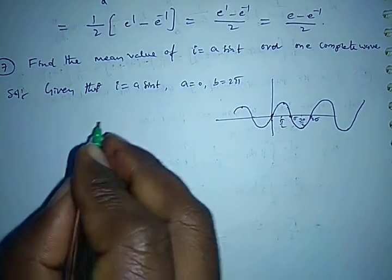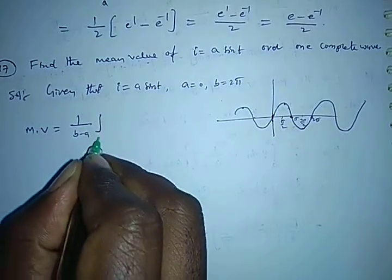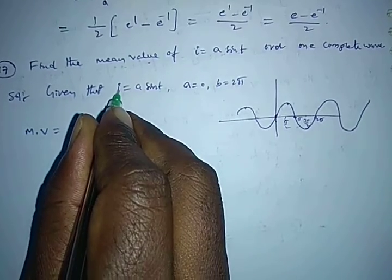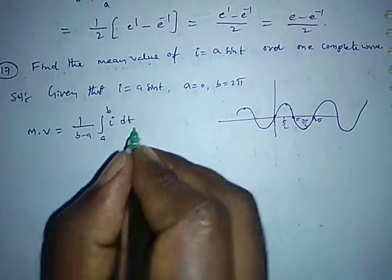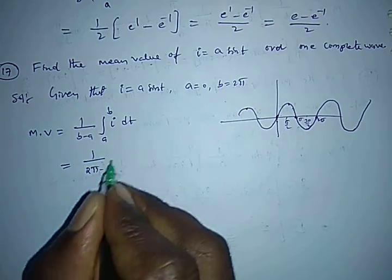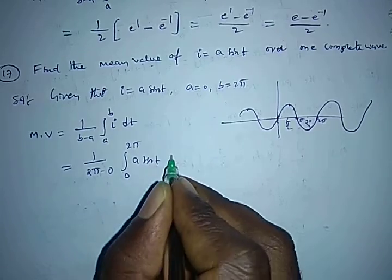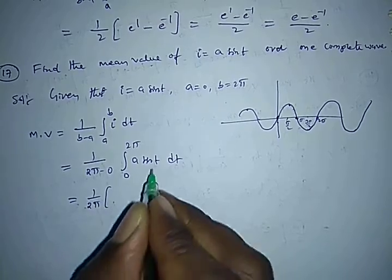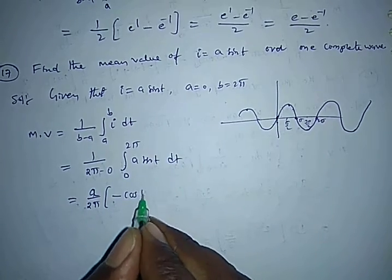The mean value formula is (1 / (b - a)) × integral from a to b of i dt. Substituting all values: (1 / (2π - 0)) × integral from 0 to 2π of a·sin(t) dt, which equals (1 / 2π) × a × integral from 0 to 2π of sin(t) dt. The constant a is written outside. The integral of sin(t) is -cos(t), evaluated from 0 to 2π.